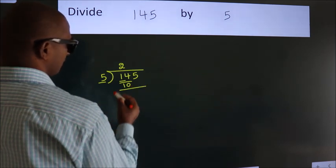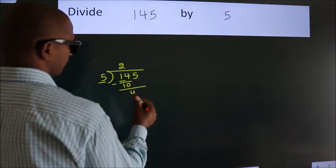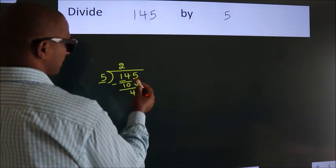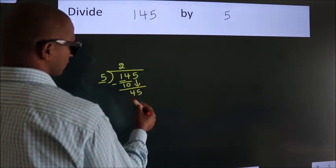Now we should subtract. We get 4. After this, bring down the next number. So 5 down. So 45.